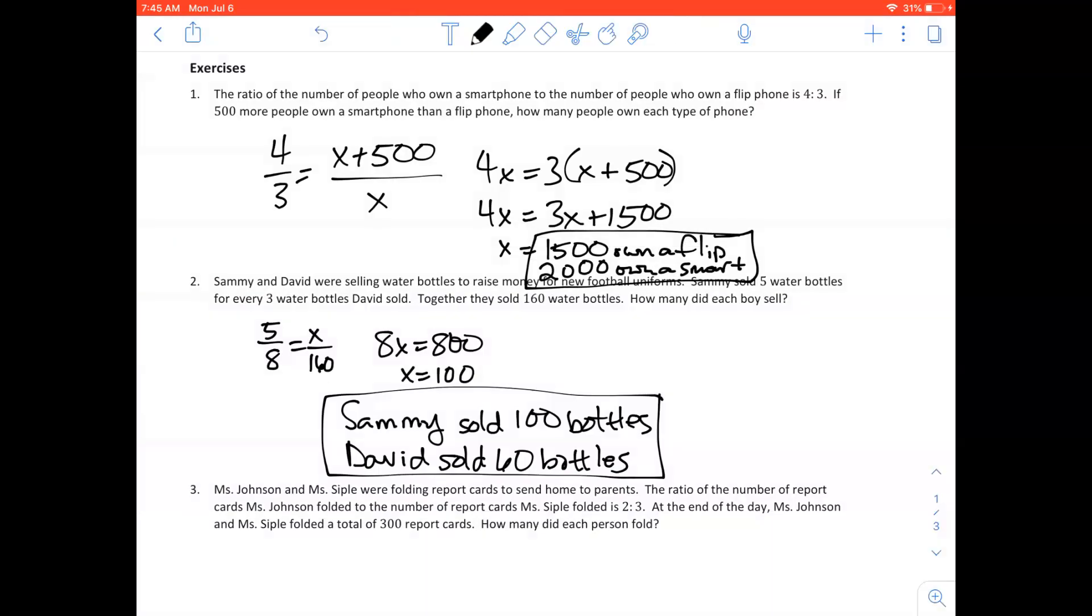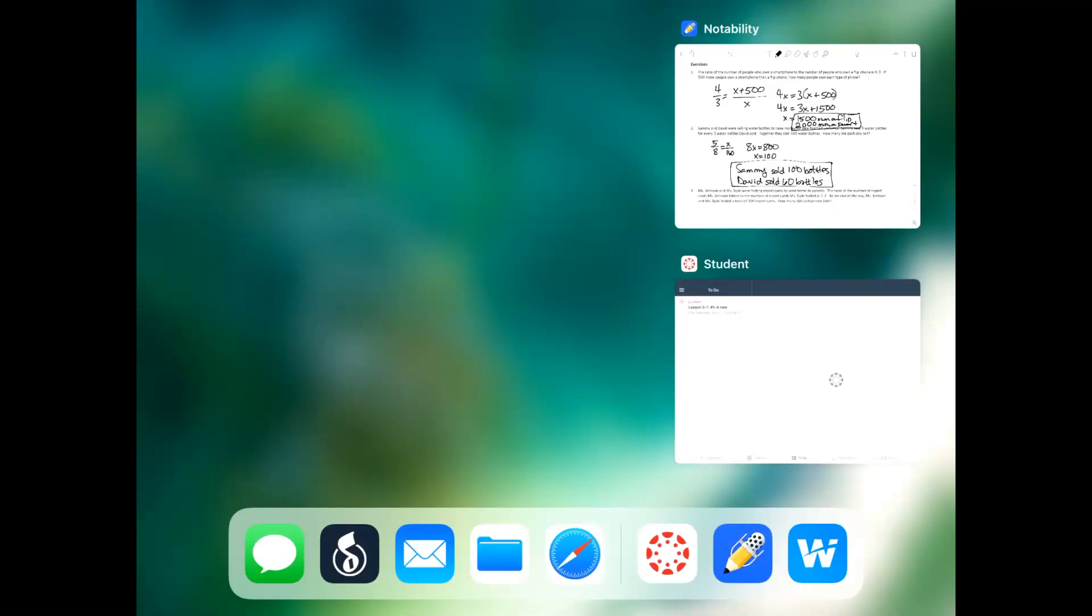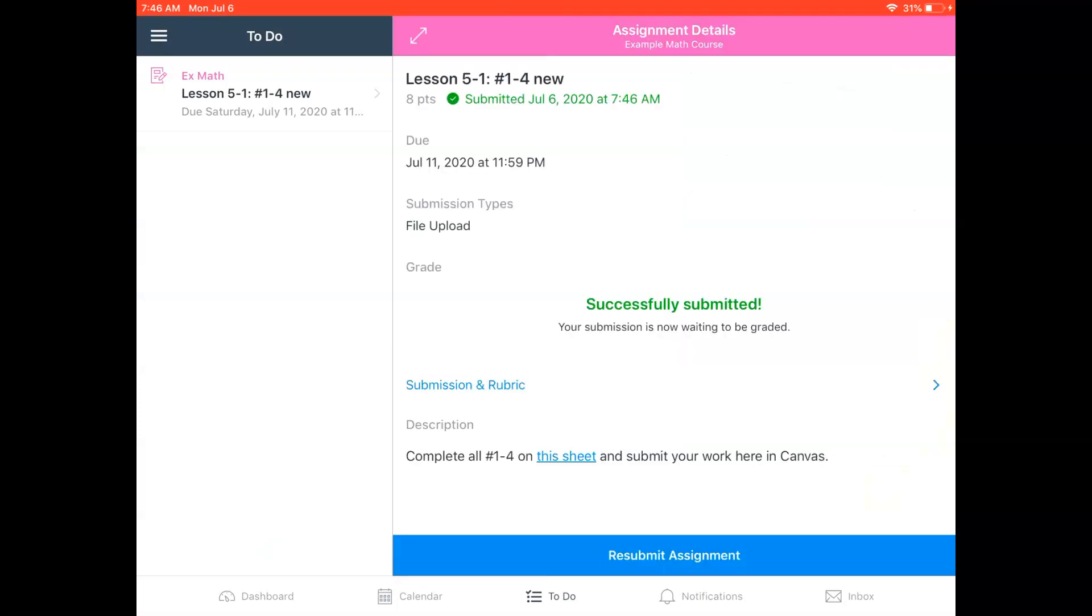You can check to make sure that it's submitted correctly by going back over to the Canvas app. So I'm going to double tap the home button and select the Canvas app. I'm here in my to-do list. Tap on the example assignment and I can see here in the middle that it says successfully submitted.